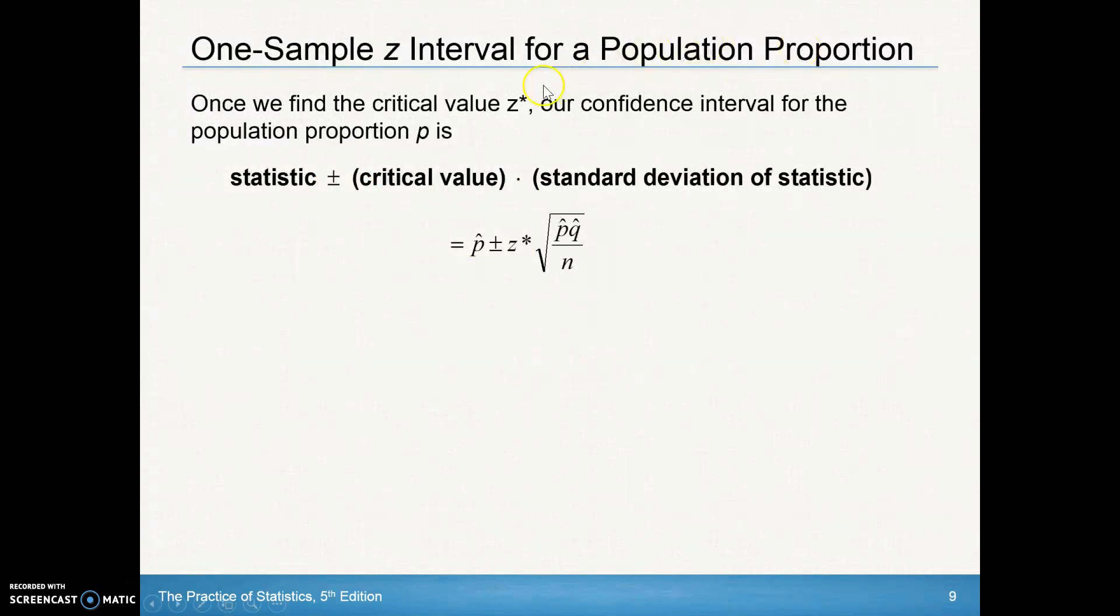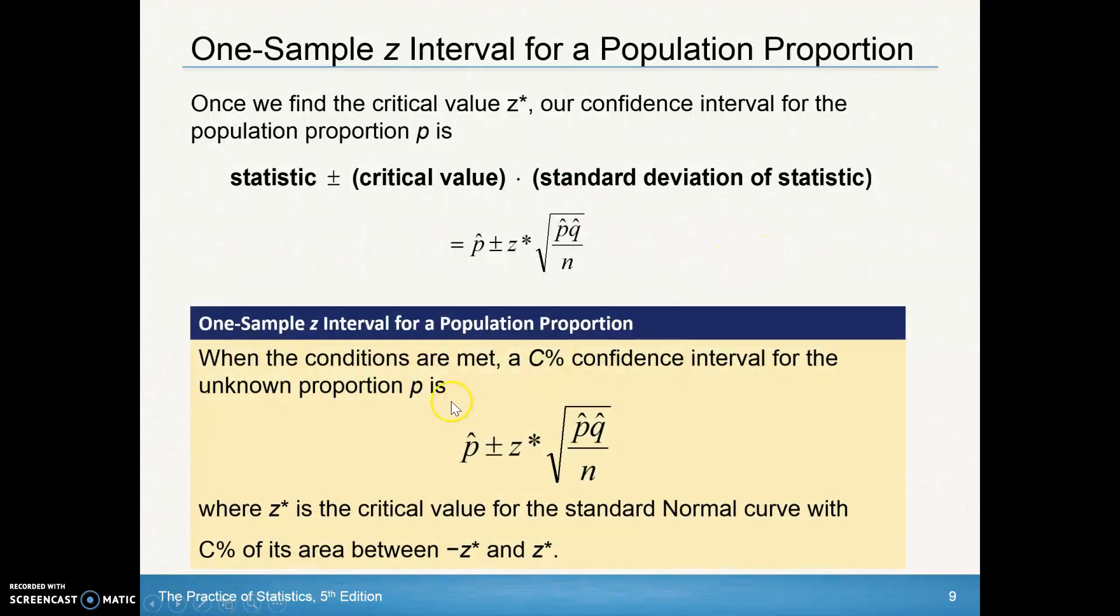Once we find the critical value, which we call Z star, our confidence interval for the population proportion p is the following. Our statistic plus our critical value times our standard deviation. Our statistic was p hat plus or minus our critical value Z star. That's calculated based on what confidence level we have. And then this would be our standard error because we used sample p hat and sample q hat because we're not given the p. When all those other conditions are met, this is the one-sample z interval for a population proportion.